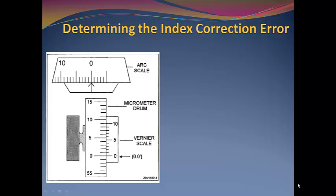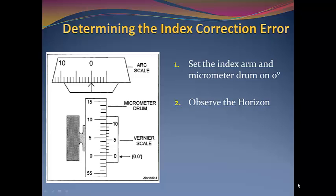We next need to determine an index correction error. We set the index arm and the micrometer drum on zero degrees. We observe the horizon, usually with the filters off.